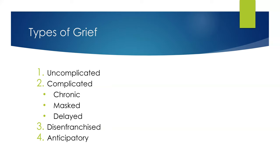Complicated grief is distinguished from uncomplicated grief by the length of time and intensity of emotion. In complicated grief, the person's responses are maladaptive or dysfunctional — usually prolonged or overwhelming. Complicated grief results when the grieving process has been impeded for some reason — something keeps that person stuck. For example, multiple recent losses could keep someone stuck in the grieving process.